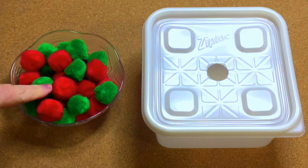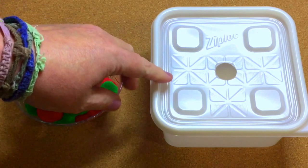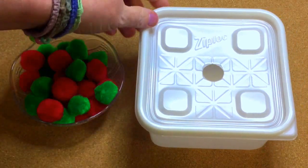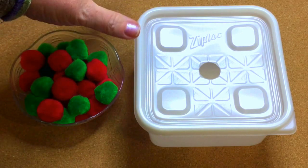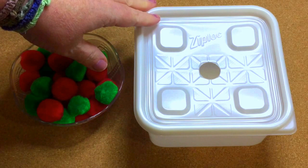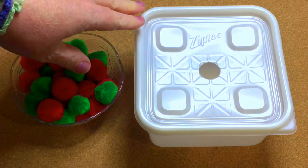You just need to have red and green pom-poms and then I used a disposable Ziploc container. These are found anywhere now for people to put their cookies in. They're in the grocery stores or at Walmart. They usually come in a set of three to four.